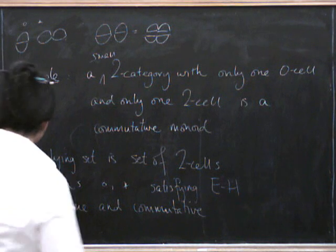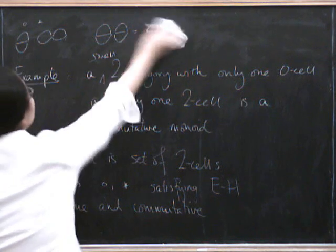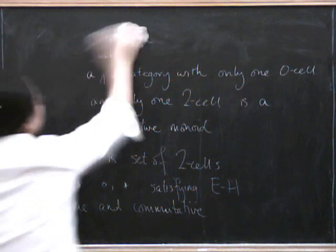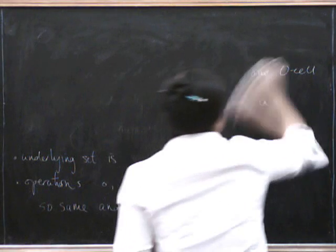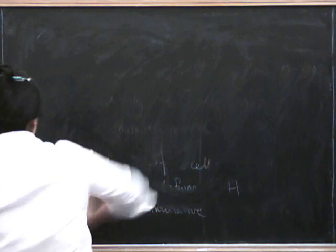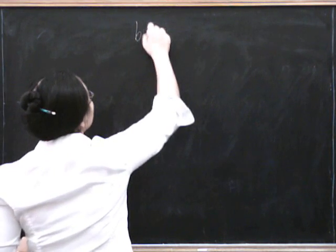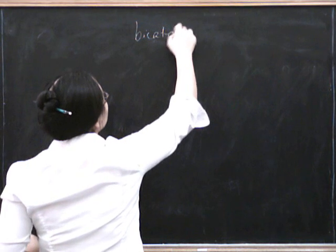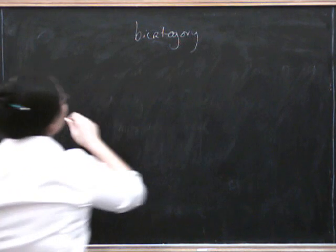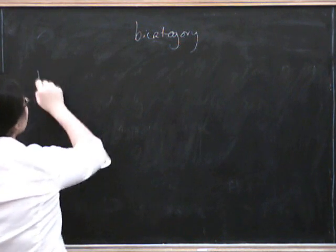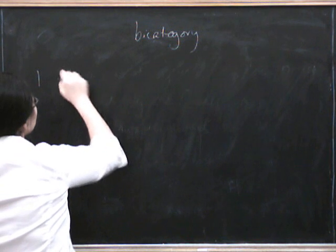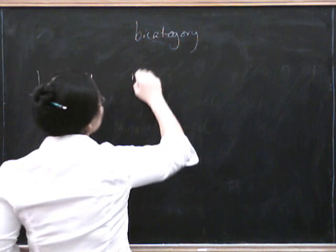So you have this slightly interesting situation: if you start with a bicategory and only have one 0-cell, you get a monoidal category.